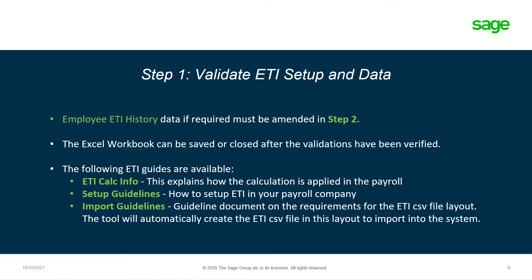Step one will validate the ETI setup and the data. Should employee ETI history data need to be amended, you may continue to step two. The Excel workbook can be saved and closed after the validation has been verified. There are also ETI guides available to assist you: ETI calc information, which explains how the calculation is applied in the payroll; setup guidelines on how to set up ETI in your payroll company; and import guidelines — a guideline document on the requirements for the ETI CSV file layout. The tool will automatically create the ETI CSV file in the correct layout to import into the system.